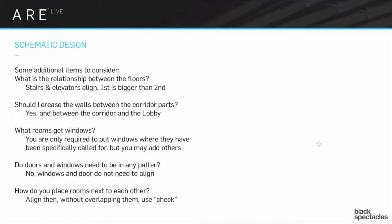Some additional items to consider. What is the relationship between the floors? Well, we started to say that the stairs and the elevators better align. I sure hope the stairs and the elevator align because it doesn't really make sense otherwise. And that the first floor is always going to be bigger than the second floor. It's okay if the second floor is exactly the same size as the first floor, but it's unlikely. You're probably going to make it so the second floor is actually smaller than the first floor.